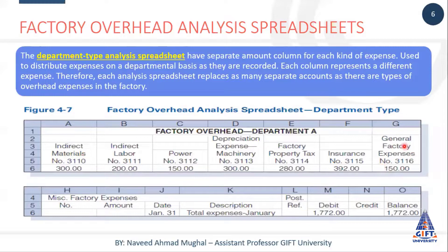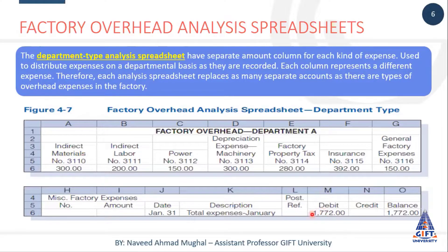Aur jaise yahan pe general factory expenses ki baat hai, toh miscellaneous factory expenses ki ek entry hai seventeen seventy two ki. Toh iski distribution mein se department A ko jo proportion aa raha hai woh charge ho raha hai - that is one fifty. Department B ko bhi isi tariqe se ho sakta hai, department C ko bhi ho sakta hai, department D ko bhi ho sakta hai. So this is basically a ledger account of miscellaneous factory expenses, and the distribution of 1772 - jo portion to charge to department A hai woh one hundred and fifty, hum ne yahan pe likha hoa hai.